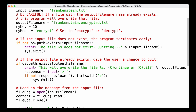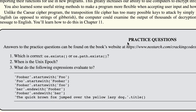With these new concepts — the open function, the read function, the write function, and the close function — we are able to encrypt or decrypt large text files and store that encrypted or decrypted message as a new text file. Now let's look at the practice questions. The first question is whether the correct call is os.exists or os.path.exists — the second option, os.path.exists, is correct because we are checking if a file exists at a specified path, and this is part of the os module.